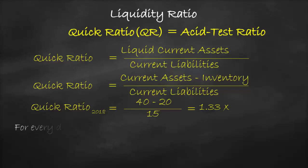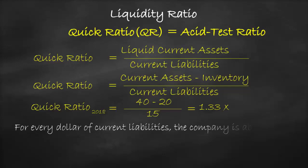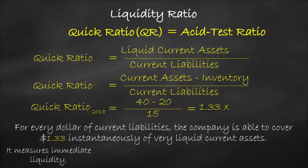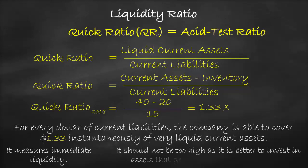This means that for every dollar of current liabilities, the company is able to cover $1.33 instantaneously with liquid current assets. It measures the immediate liquidity of the company to meet its short-term obligations. It should not be too high, as it is better to invest in assets that generate a higher return, such as long-term assets, while short-term assets generate a lower return.